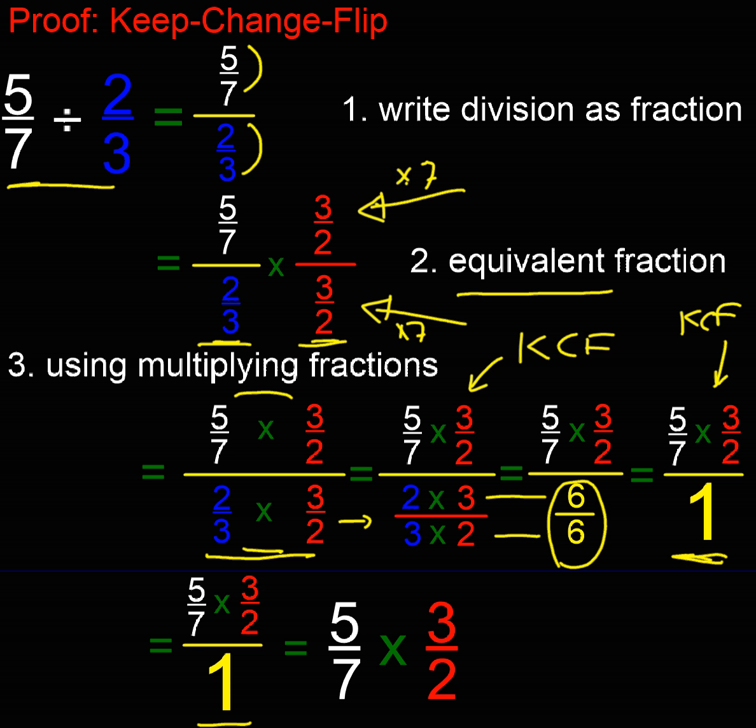And 1 half divided by 1 is 1 half. So we can just ignore this divide by 1, can't we? And what are we left with? We're left with 5 sevenths times 3 over 2.